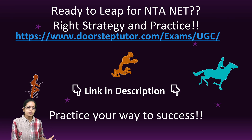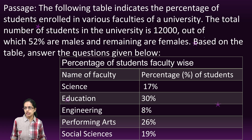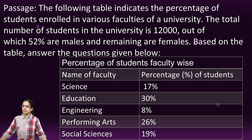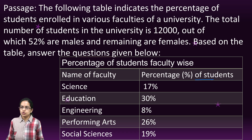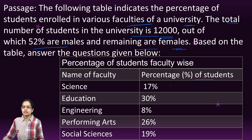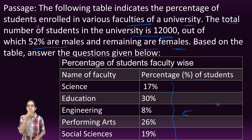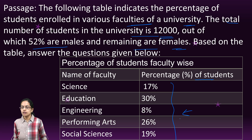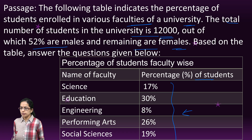Now we move to a different kind of question. Here we have a table showing the percentage of students enrolled in various faculties of a university. The total number of students is 12,000, of which 52% are male and the remaining 48% are female. The table shows the proportion of students across different departments or faculties.